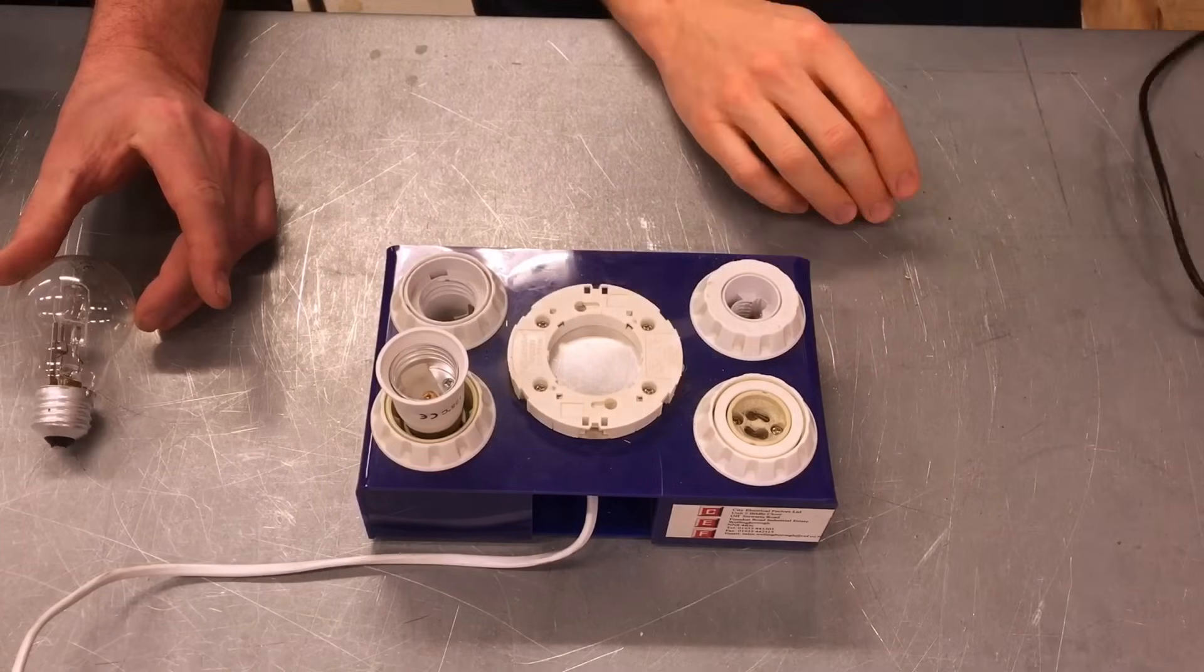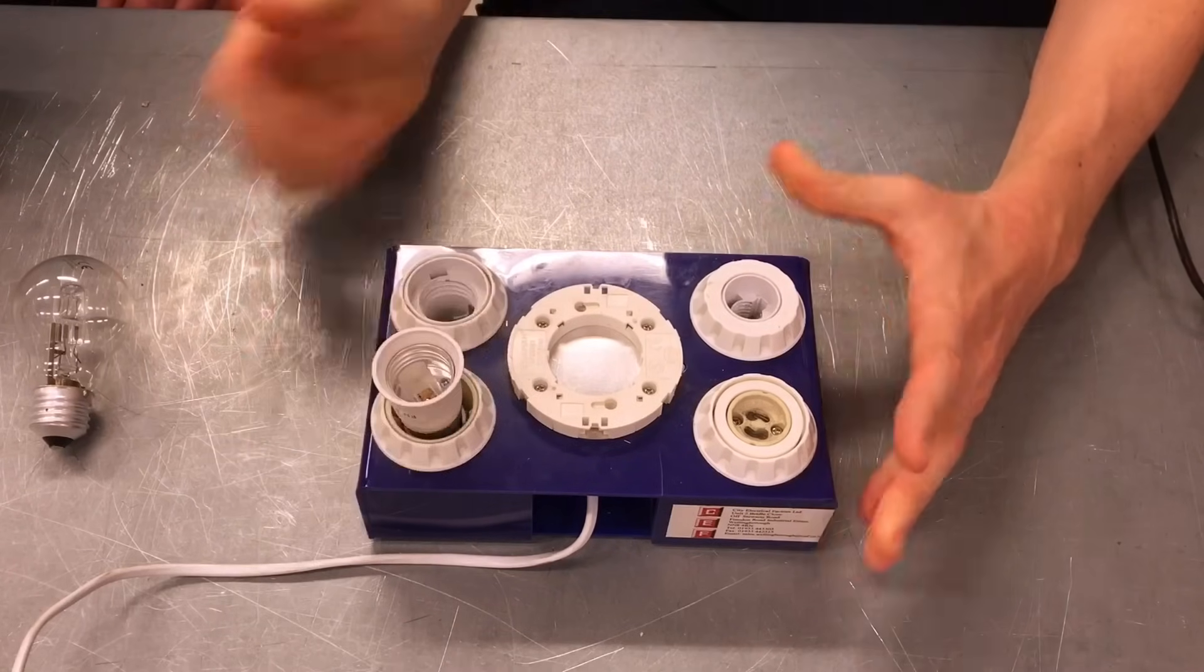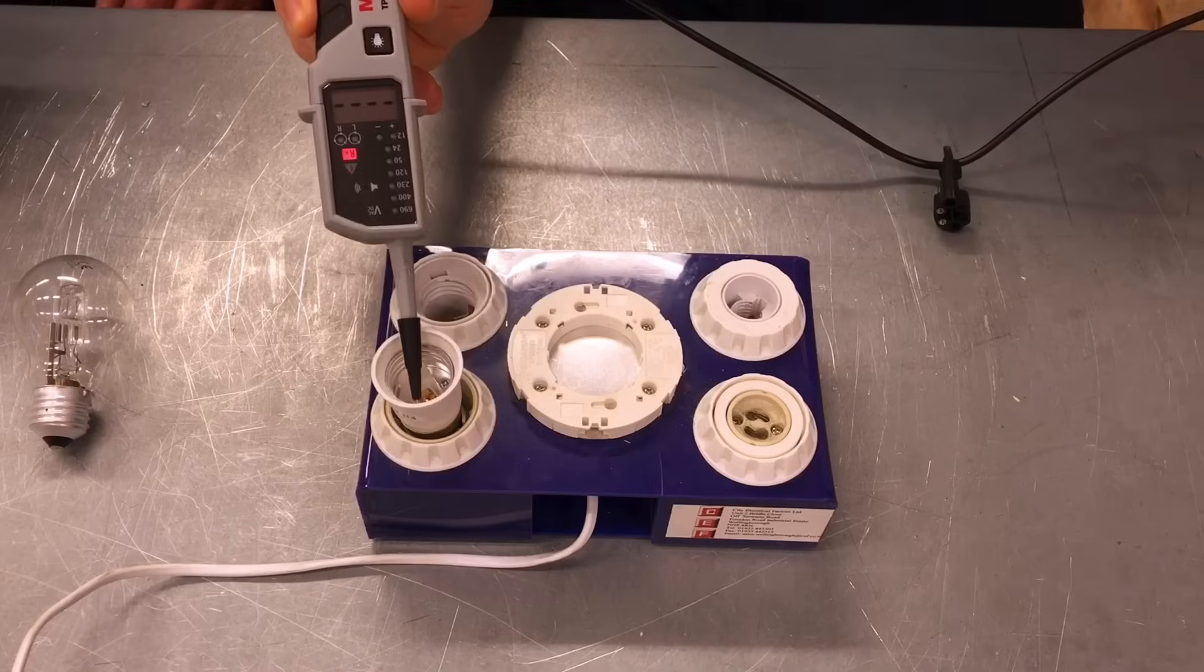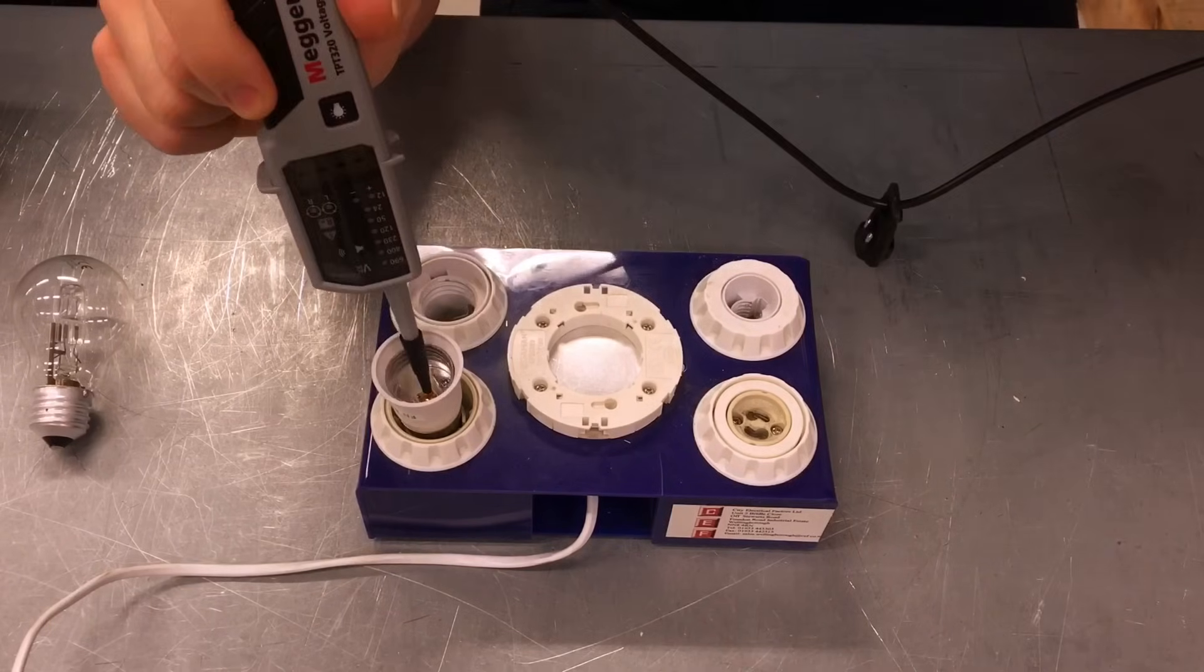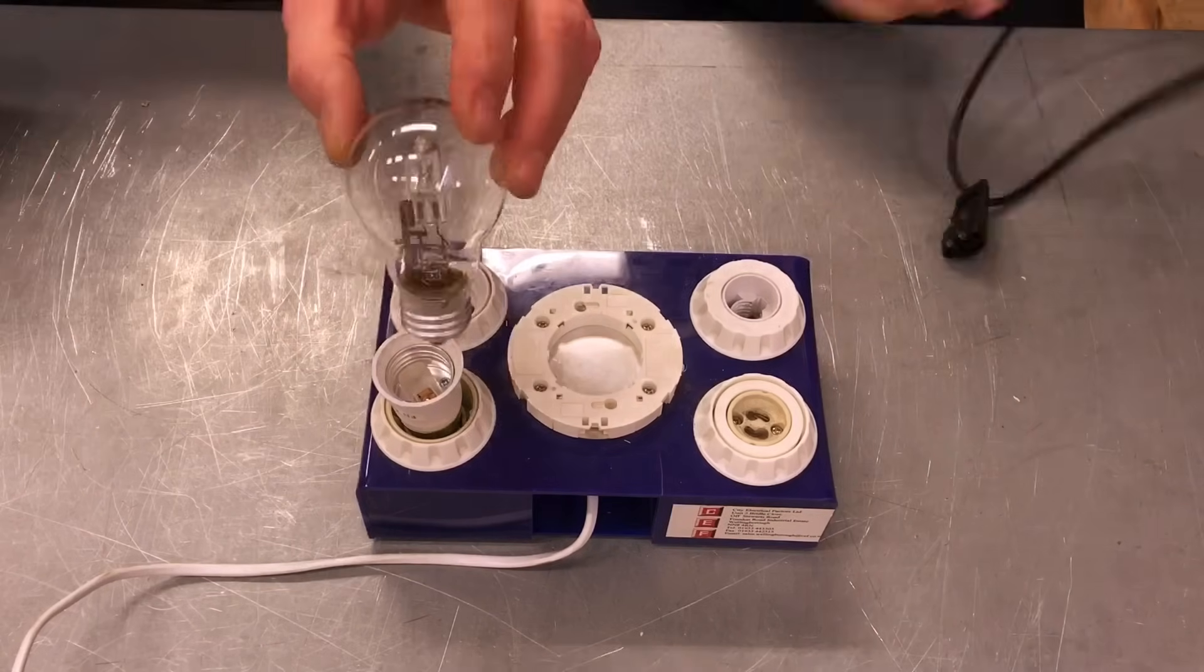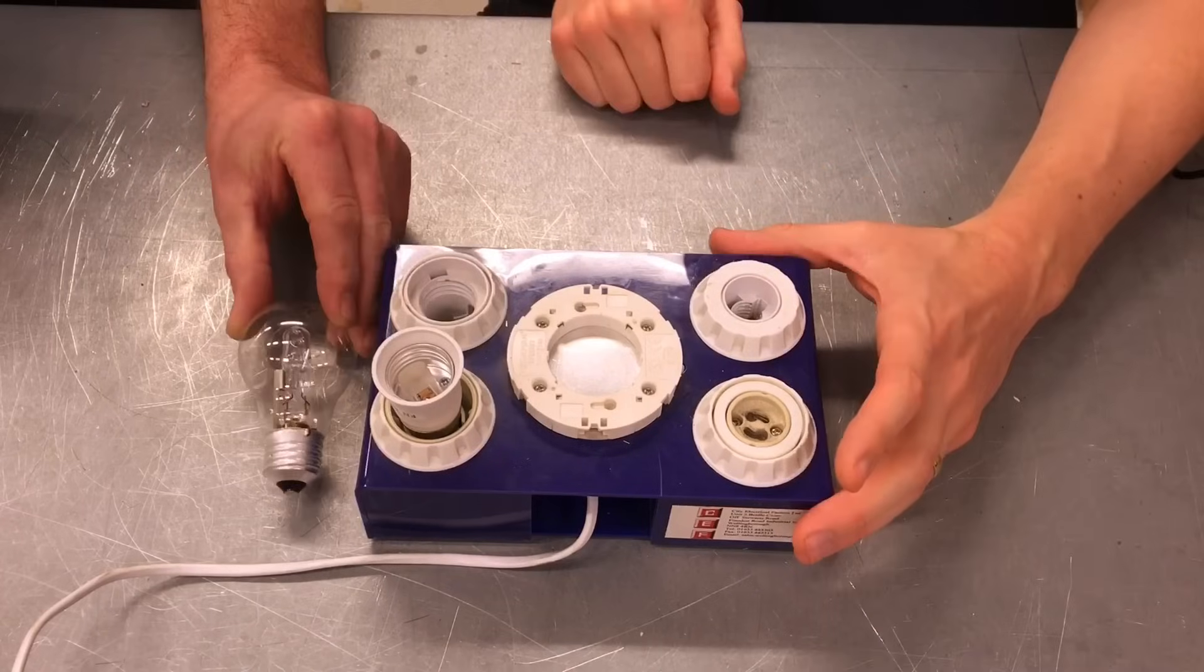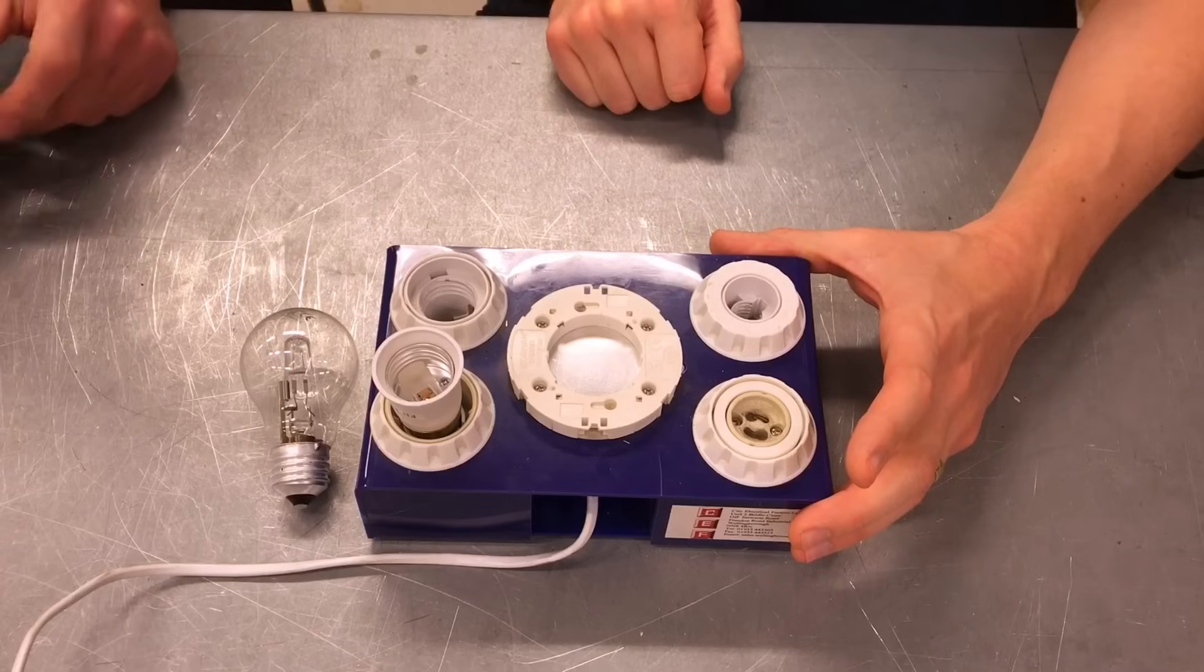So we're going to now change it round just to prove the point. So if we swap that over, turn it just 180 degrees. Again, we don't know which way round that is. If we now connect between earth and this outer, we've got nothing. Zero. We've got absolutely zero volts. But if we connect onto the center pin, you can see there we've got the line connection. So again, if I was doing it this time, the customer was super lucky and they started screwing it in and touched it there. No shock, because they're only connecting with a less dangerous neutral. 50% chance of, in the worst case scenario, killing yourself.